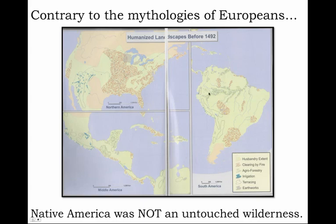Whether it was clearing forests with fire, growing food crops in eastern woodlands through agroforestry, creating massive irrigation projects in the dry Southwest, creating terraced farming in the Andes Mountains of South America, or creating the kind of earthen works we saw in ancient Ohio — these landscapes were not natural and untouched. They were re-engineered by human beings, by Native American people — not by aliens or lost and mysterious races of people — but by the ancestors of modern Native people who put their own imprint on the humanized landscapes of the Western Hemisphere.